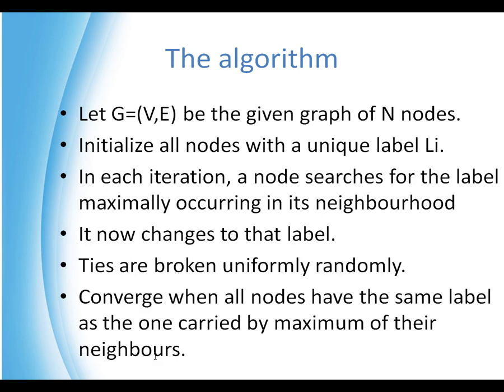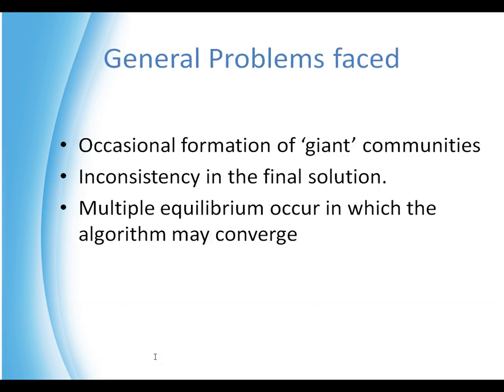Whenever ties occur, the label is determined uniformly and randomly. The termination criteria — the convergence condition — is the situation when all nodes carry the same label as the maximum of their neighbors, which basically means the nodes are unable to adapt anymore.